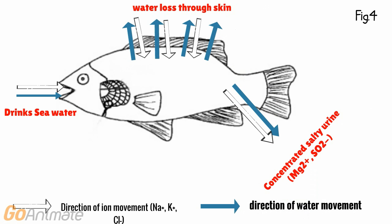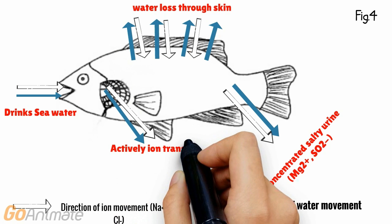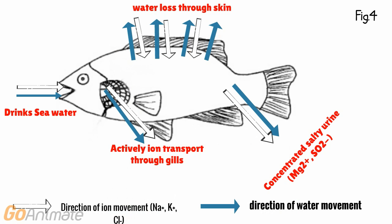Salt is removed by chloride secretory cells in the gills, which actively transport salt from the blood into the surrounding water. In the ocean, sodium and chloride ATPase molecules pump sodium and chloride out of the fish's blood into the saltwater flowing over their gills.